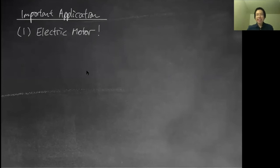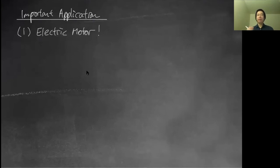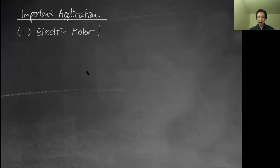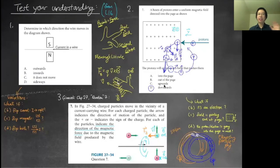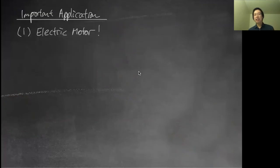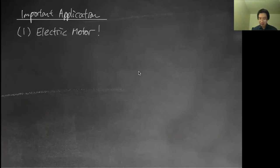Using the right-hand rule: put your hand along V going up, then wrap toward B out of the screen — the force from V cross B points to the right. However, the charge is negative, so the actual force is opposite: the force is to the left. If using Fleming's left-hand rule instead: since it's a negative charge moving up, imagine the conventional current going down, put your second finger pointing down, B out of screen — your left thumb points to the left. Both methods agree.